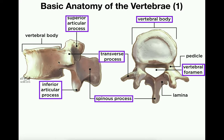Looking from the lateral side, there are processes sticking upward and downward, with one on each side. The ones on top are the superior articular processes, and on the bottom are the inferior articular processes — there are two of each. The general shapes of these features can vary between vertebra types, but they're all in pretty much the same locations, making identification a bit easier.